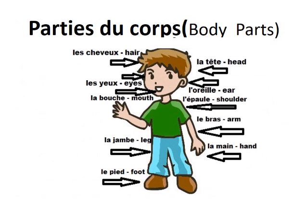Les parties du corps — that is the body parts. You can see the full diagram of a human body. La chevelure — hair. La tête — head. Les yeux — eyes. L'oreille — ear. La bouche — mouth. L'épaule — shoulder. Le bras — arm. La jambe — leg. La main — hand. Le pied — foot.